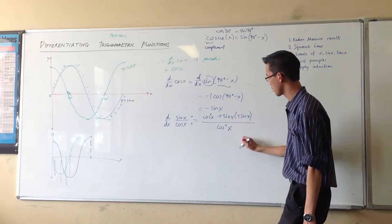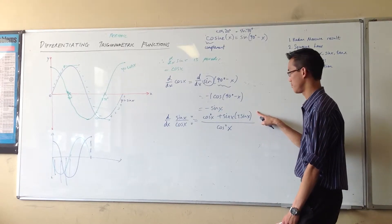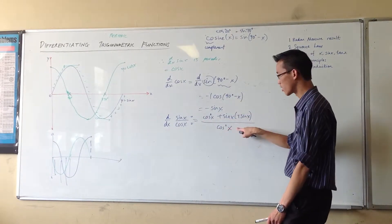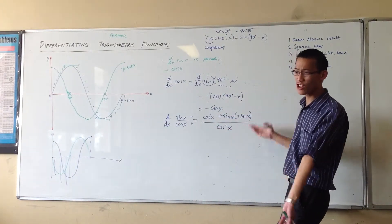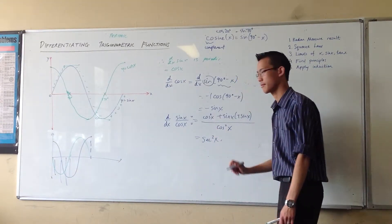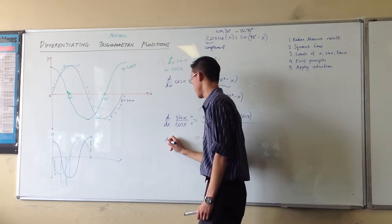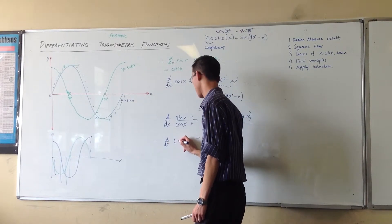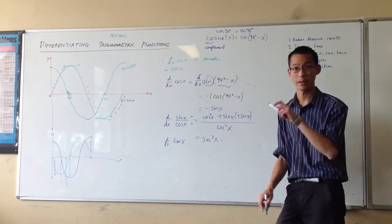The bottom is v squared, which is cos squared x. So I've got one - that's the Pythagorean identity there - over cos squared x. You could leave it like that, but it's simpler to use the reciprocal identity. So the derivative of tan is equal to sec squared x.